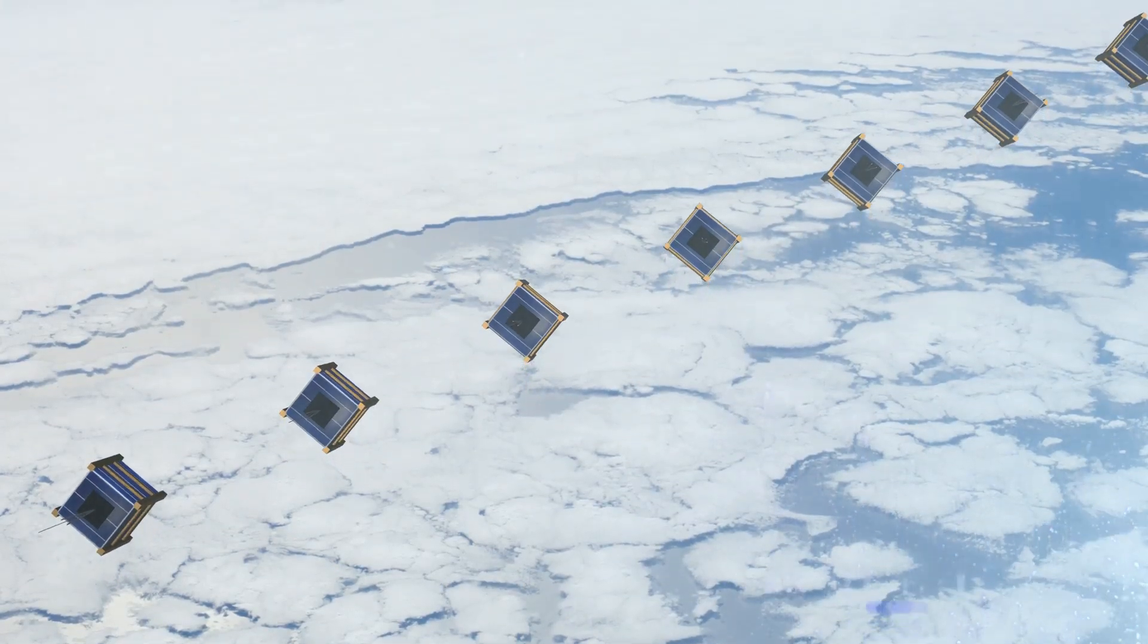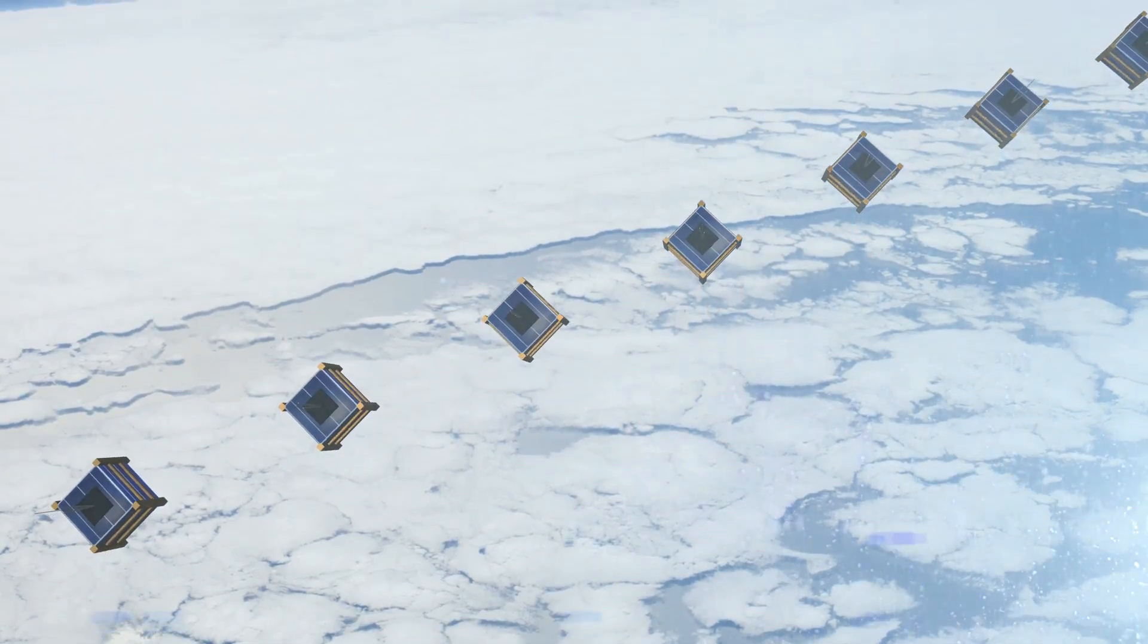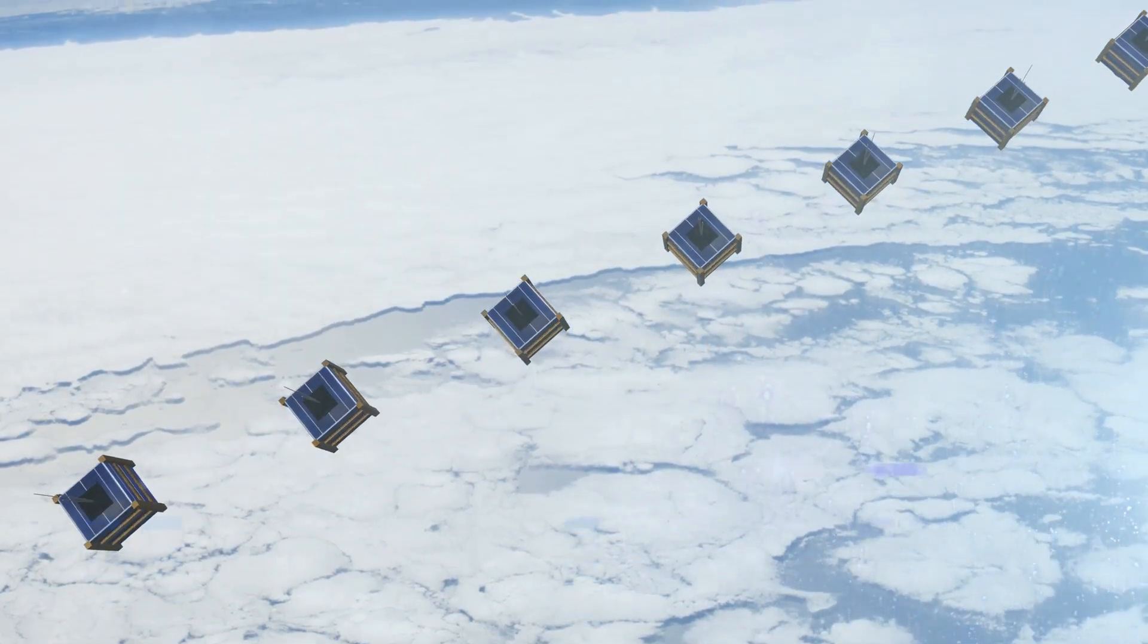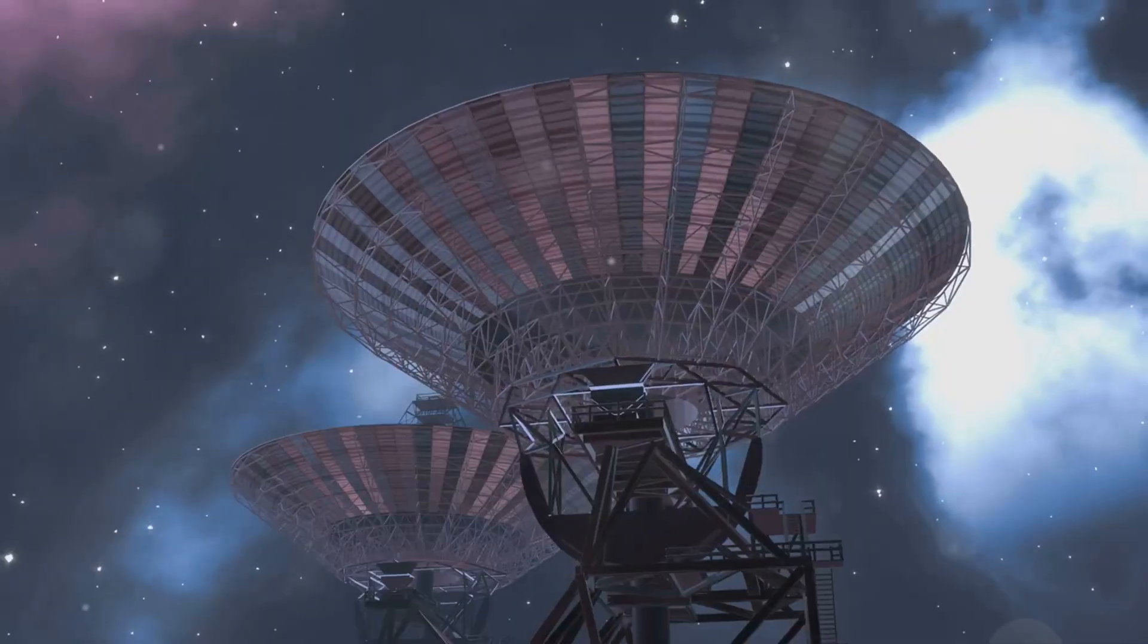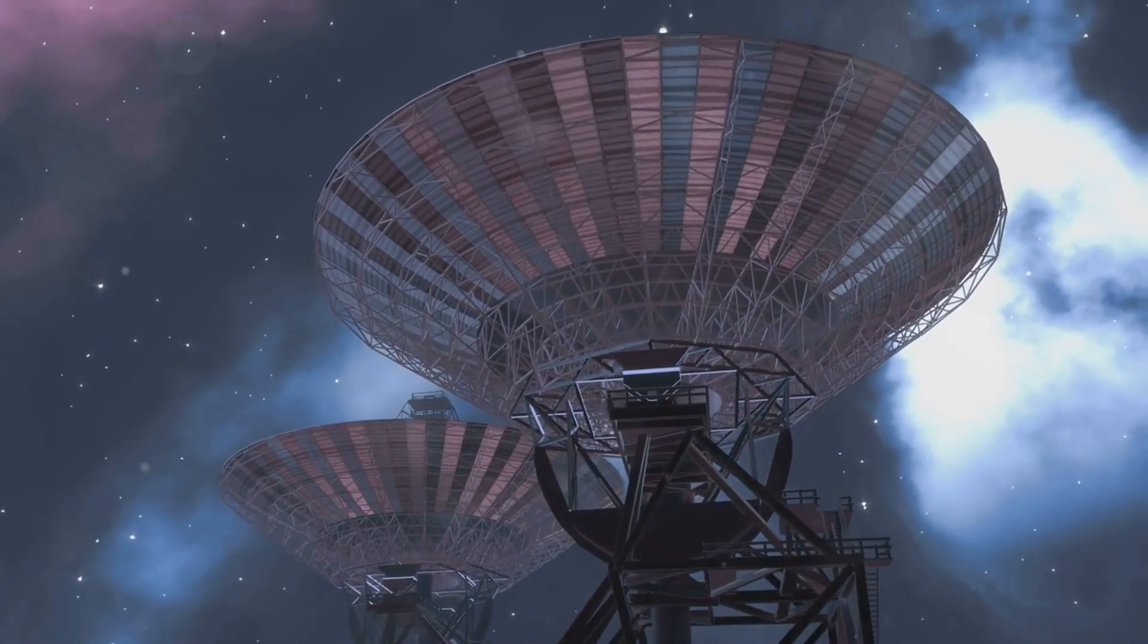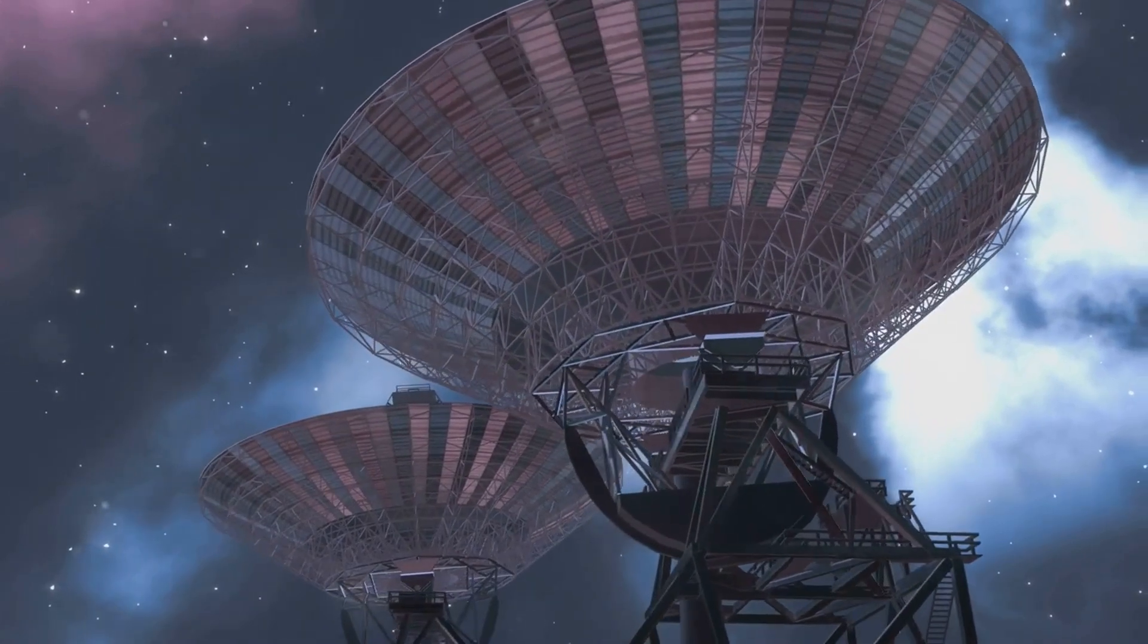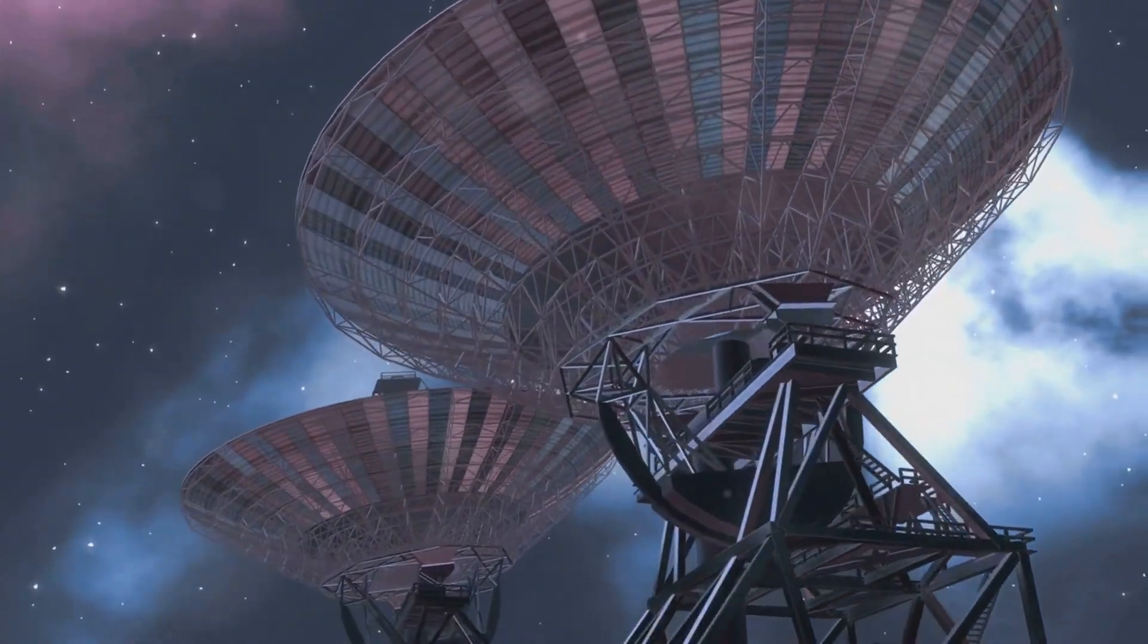Satellites in space also play a crucial role in detecting gamma ray bursts. They can see the entire sky and can alert astronomers on Earth when a burst is detected. This allows us to study these events in more detail.